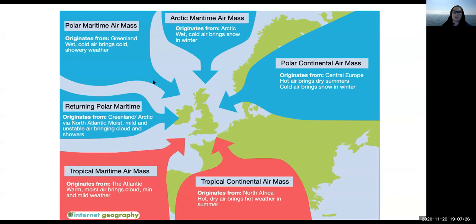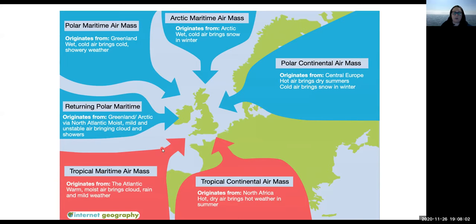First up, a quick recap on air masses. If we understand where our weather is coming from, we can understand what it's likely to do when it gets here. Most of our weather traditionally comes from the southwest — up through the southwest approaches — so we're bringing in tropical maritime air masses, which tend to be relatively warm, moist, bringing cloud, rain, and fairly mild weather. Because it's coming all the way across the Atlantic, weather systems pick up a lot of water and become very wet and moist, and when they bump into the land it starts to rain.